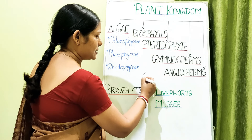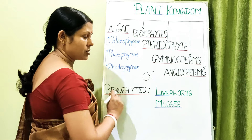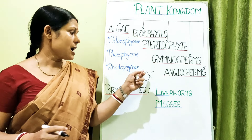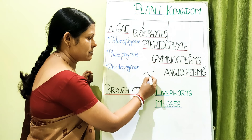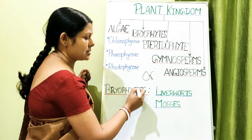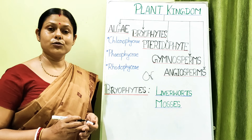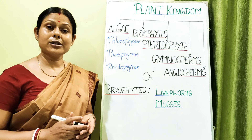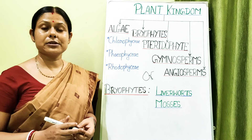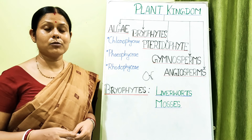The zoospores are pear-shaped and have two unequal flagella — one is whiplash type, which is very long, and another is tinsel type, which has hairy projections on its body. The plant body is gametophytic, so when the zoospores settle on a suitable substratum they grow into either a male or female gametophytic plant body.